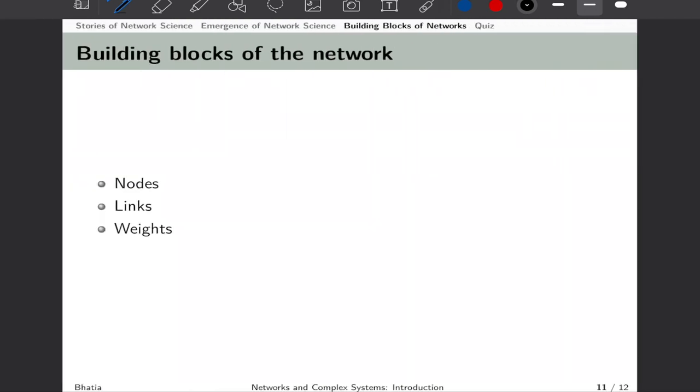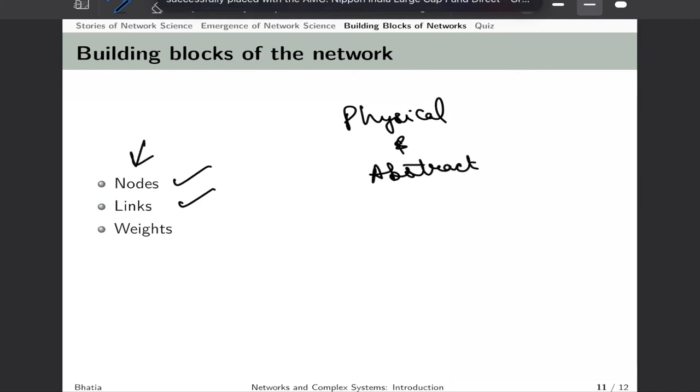However, I have been using the word networks and nodes so many times. What are the building blocks of these networks? When someone asks what is the network, they are asking what are the nodes, what is their physical significance, and what are the links between these nodes? Are these links superficial, abstract or realistic? For example, in social networks, there is no physical link. You impose a link if you have talked to that person. However, in transportation networks, if there is a physical track between stations A and B, we say there is a physical link.